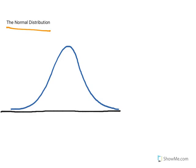I want to highlight in this video three important concepts about this normal distribution curve. The first one is that it is a continuous probability distribution. That means it's used to model continuous random variables, and we can determine the probability that whatever continuous random variable we're talking about falls between any two values.